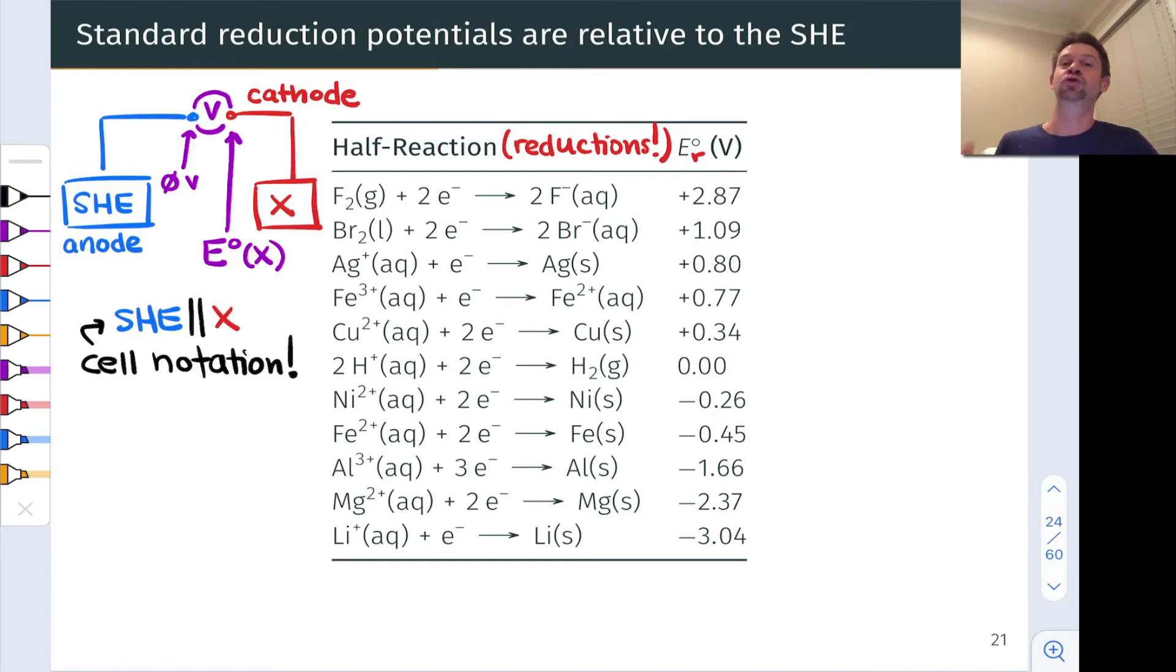And their cations, conversely, do not want to undergo reduction. So these potentials at the bottom of the table are highly negative and correspond to very stable, unreactive cations that do not want to undergo reduction.